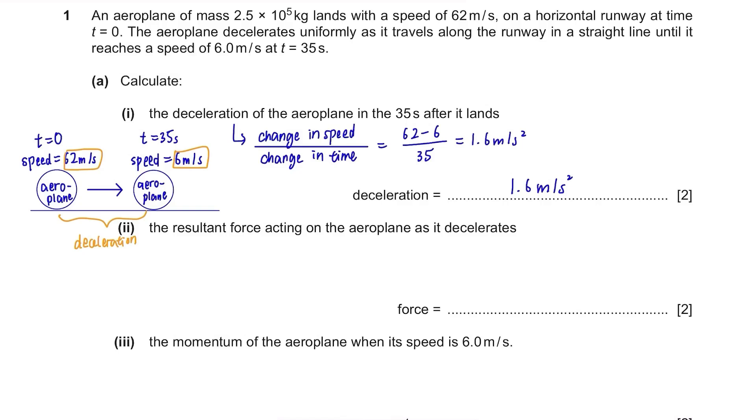The resultant force acting on the aeroplane as it decelerates. The formula to calculate force is F equals mass times acceleration and we already found deceleration from the previous question and the mass is given in the question.